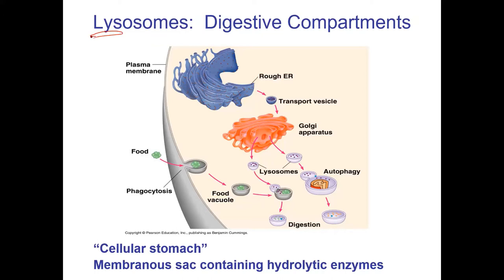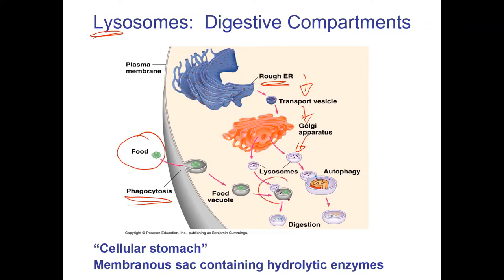The word 'lyso' means something like breaking or bursting, so what's going on in a lysosome is things are getting broken down. These are very much like cellular stomachs — they're acidic, just like your normal stomach. In this slide you can see a lysosome being formed: proteins are made in the rough ER, put into a transport vesicle, go to the Golgi body, and then go to another vesicle. These digestive proteins merge with food brought in by phagocytosis, making a digestive compartment — a cellular stomach.